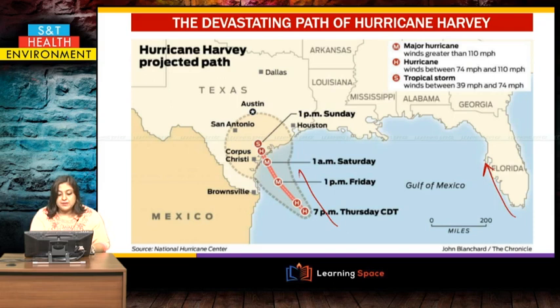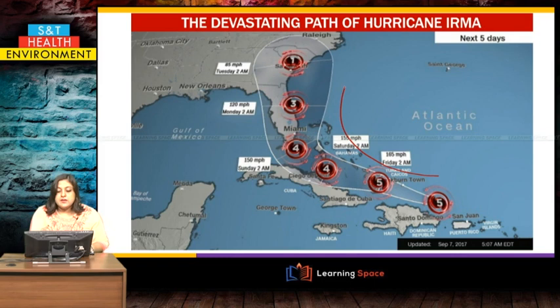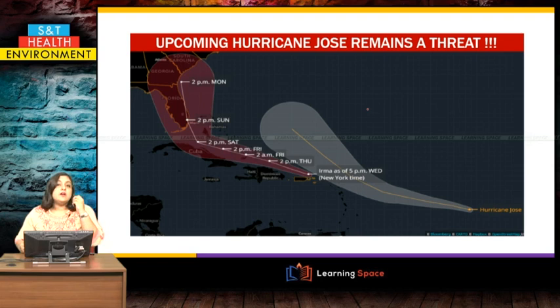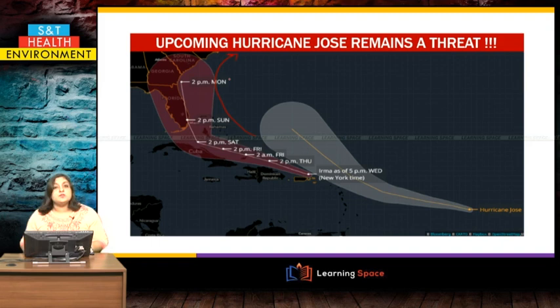Hurricane Harvey devastated the Texas region, while Hurricane Irma's path went toward the eastern Gulf of Mexico — the Miami region — and then up toward Georgia. The next hurricane, Hurricane Jose, was projected to potentially have a devastating effect even on New York City and Washington as it tracked along the east coast of America. These are examples of the hurricanes that affect the eastern American coastline.